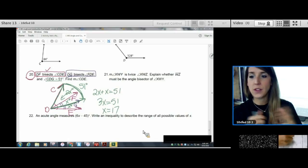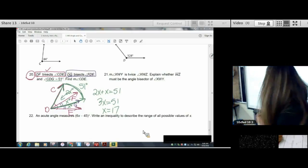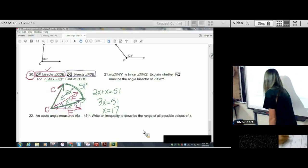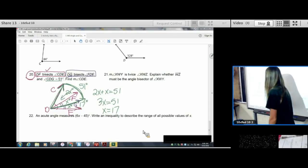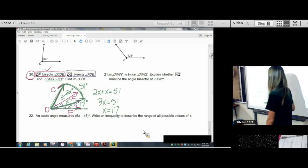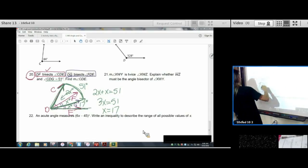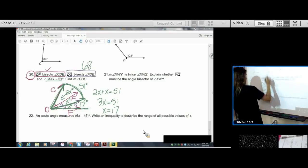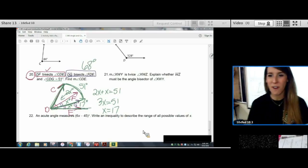Okay. So 3X is 51. X is 17. That is not the answer. X is 17. And now we want the whole angle. 51 plus 17. That's where we get our 68 degrees. Cool problem.